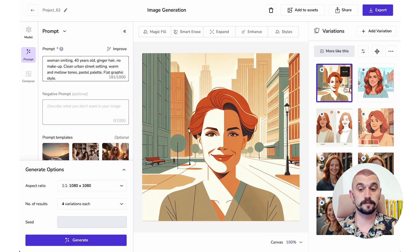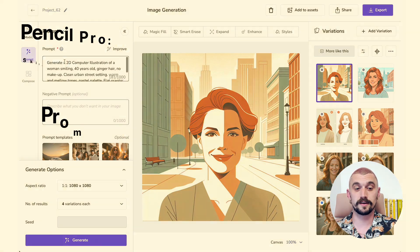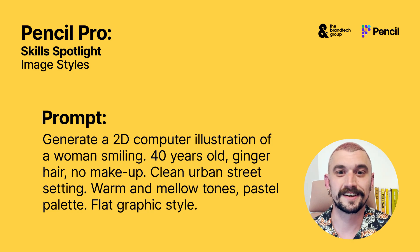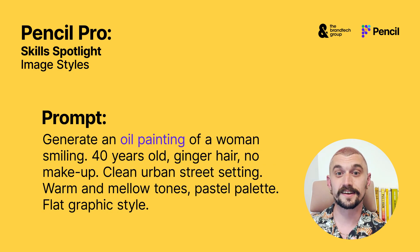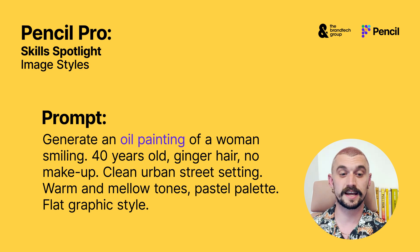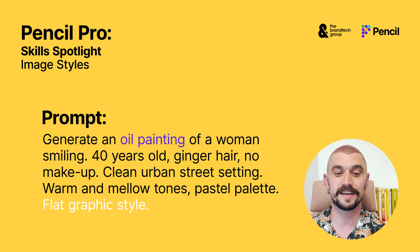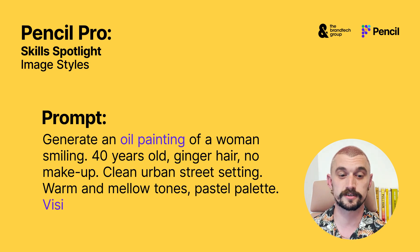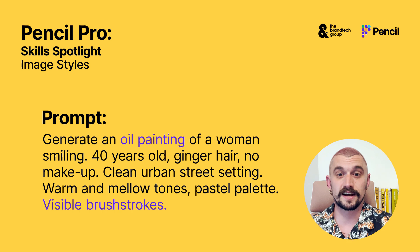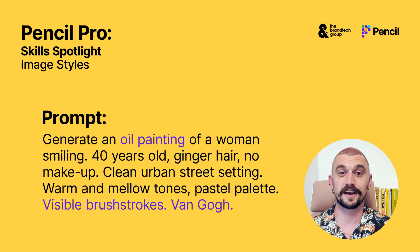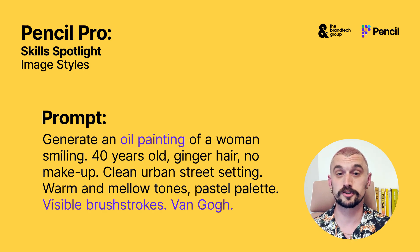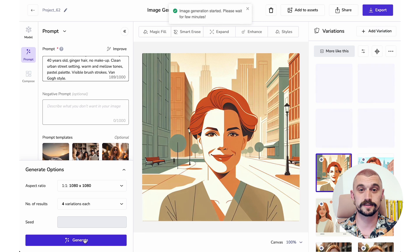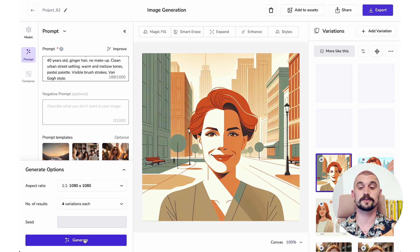Moving on from that, we can play around a little bit more with the style and do things that are a bit more creative. I'm going to go for an oil painting. I'm not just going to change the medium — I'm going to add some extra details. I don't want that flat graphic style anymore; in this case, I want visible brush strokes. We can also specify an artist as a reference — I'm going with Van Gogh, a really good reference point because there are so many images available to all the models. We're trying four generations again.